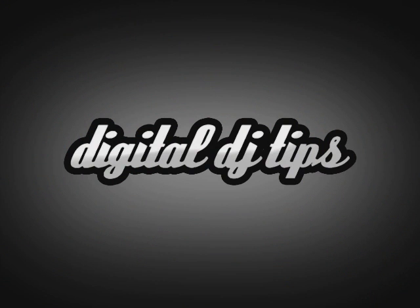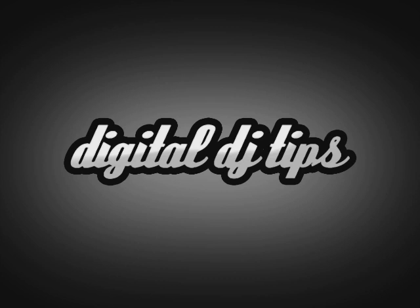Getting started, you're going to first need to download and install a couple things, both on your mobile device and on your laptop or desktop. First off, you'll need the Touch OSC app for Android or iOS. Second, you're going to need a piece of freeware called Pure Data. What Pure Data is going to do is work with the basic.pd file that Touch OSC will give you. This simply serves the purpose of connecting your mobile device to your computer so it can send data back and forth.